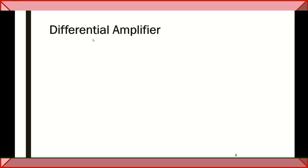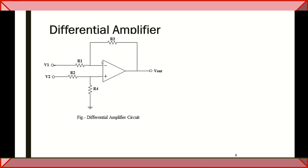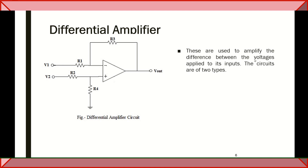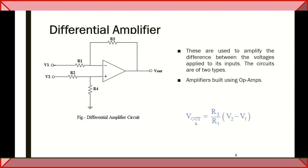The differential amplifier needs two inputs because it has to find the difference. We are giving two inputs V1 and V2. The first input passes to the inverting terminal and the second input is given to the non-inverting terminal. We measure the output voltage at the output terminal. This device is used to amplify the difference between the voltages applied to the inputs. Amplifiers are constructed using op-amps. The output voltage is: Vout = (R3/R1) × (V2 − V1), where R3 is the feedback resistor and R1 is the input resistor. The difference between the two input signals is multiplied by R3/R1 and amplified.